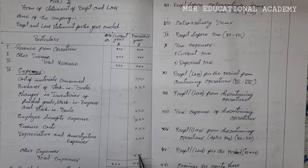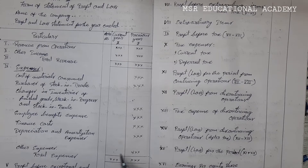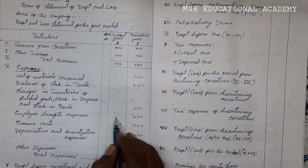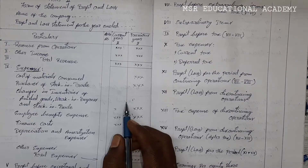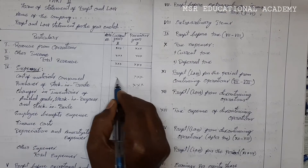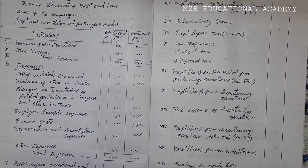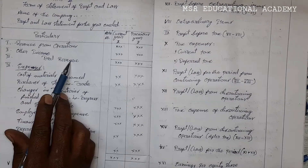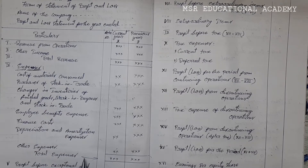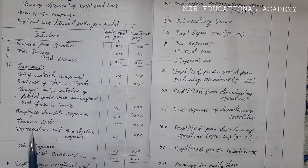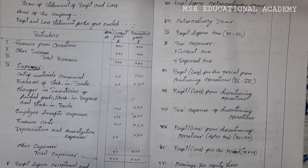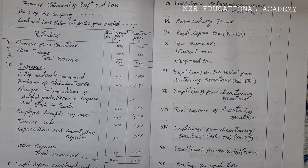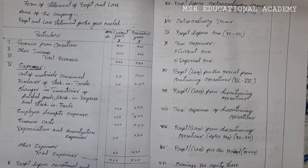You should total these expenses. With this total expenses, we should compute the profit before exceptional and extraordinary items and tax. That is the total of revenue (Roman numeral III) minus the total of expenses (Roman numeral IV). The difference is profit before exceptional and extraordinary items. In these expenses, there is no expenditure of income tax.